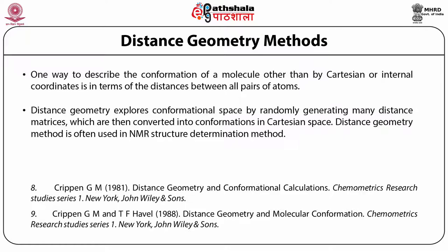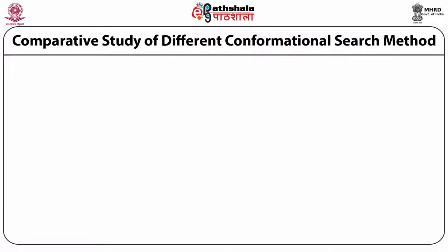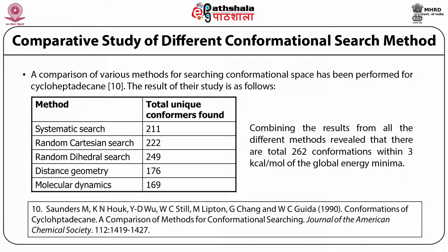Distance geometry optimization works not in Cartesian space but by converting it to a distance matrix. Starting from an initial conformation, it calculates distances between non-hydrogen atoms and optimizes these distances, which are fewer in number than atom coordinates. The advantages and disadvantages of the method are detailed in the referenced paper.